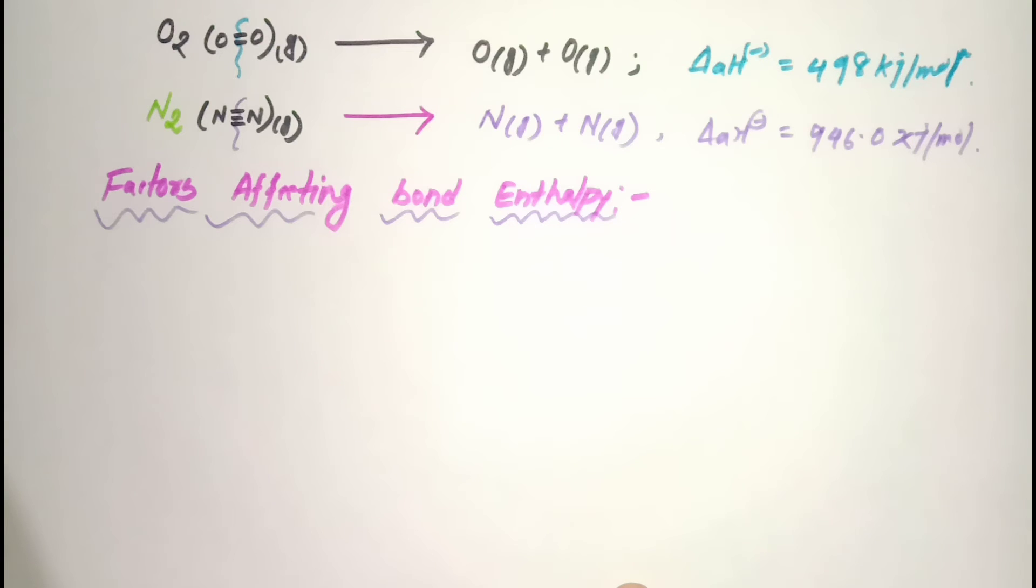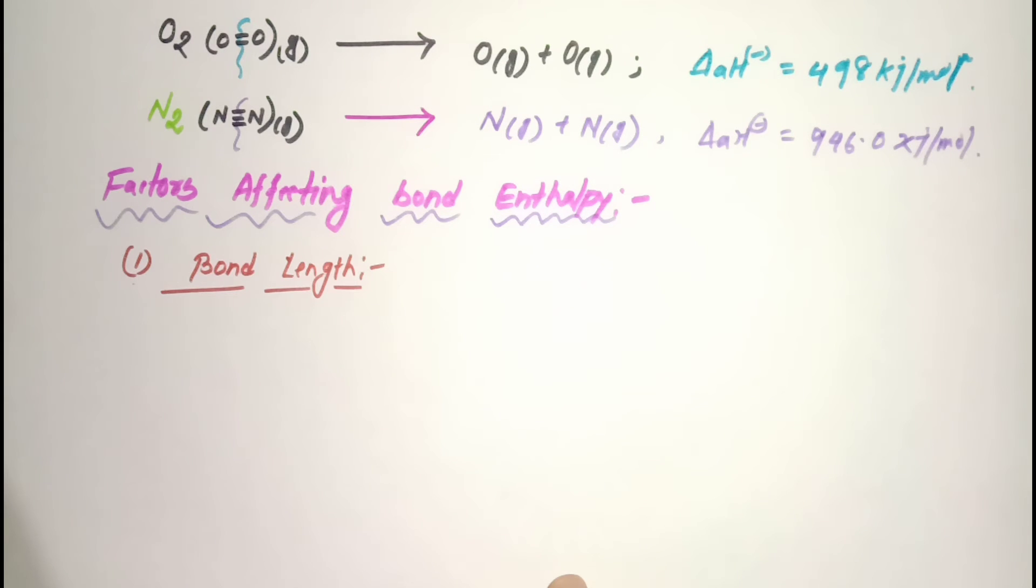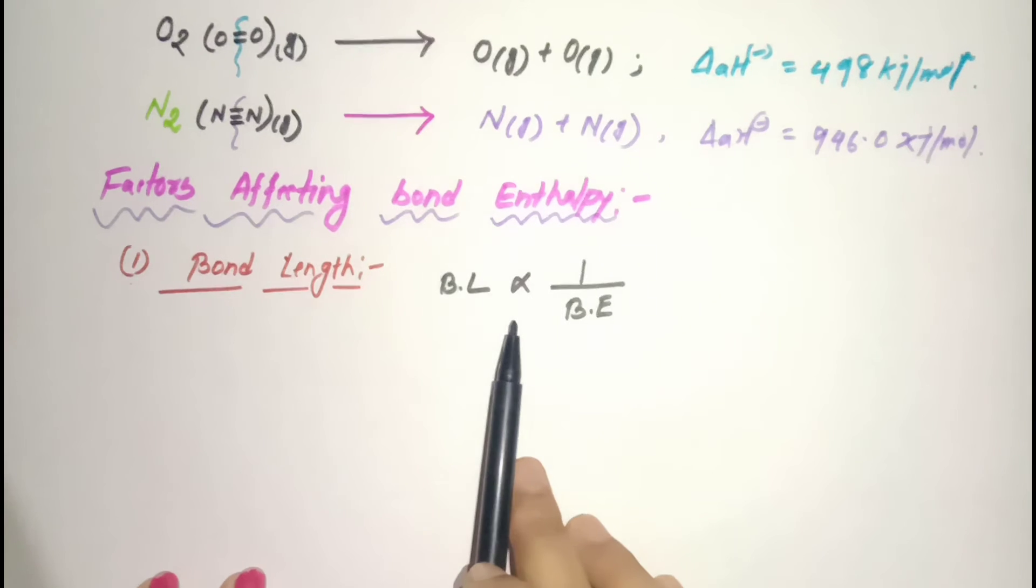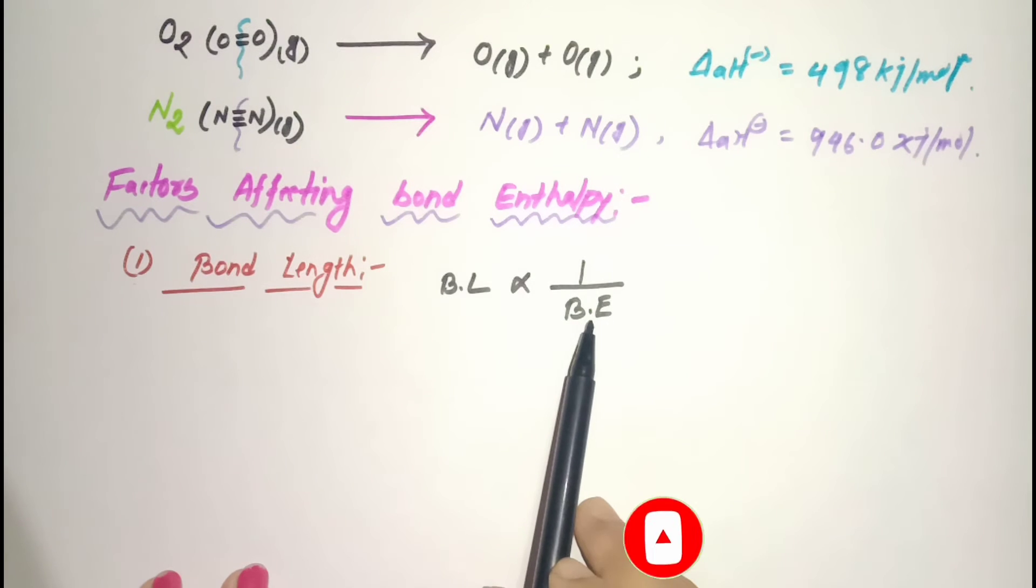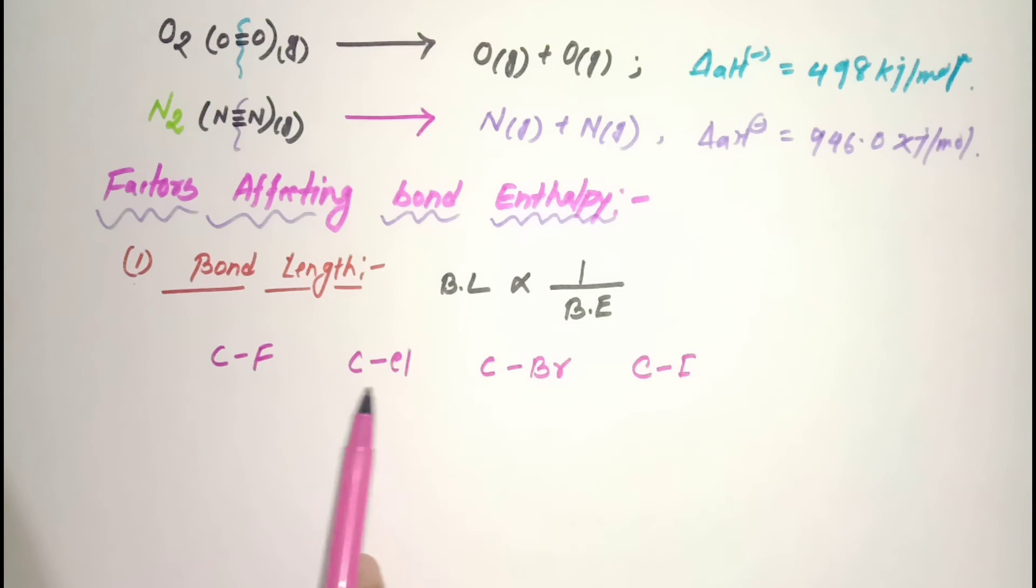Let me explain some factors about bond enthalpy. The first factor is bond length. The relationship is: bond length is inversely proportional to bond enthalpy. These are examples with Group 17 elements - as atomic number increases, atomic size also increases.